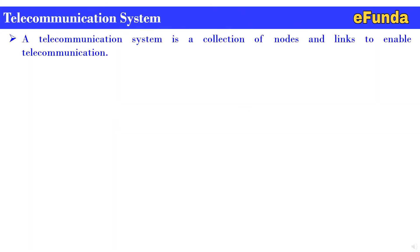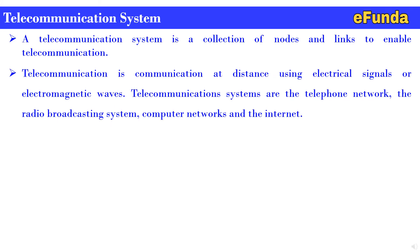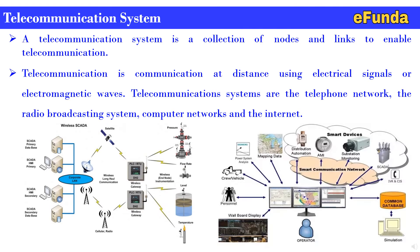A telecommunication system is a collection of nodes and links to enable telecommunication. Telecommunication is communication at a distance using electrical signals or electromagnetic waves. Telecommunication systems include telephone telecommunication networks, radio broadcasting systems, computer networks, and the internet. A complete interface system with various kinds of devices is shown in reference photographs where smart communication networks are being used with smart devices.